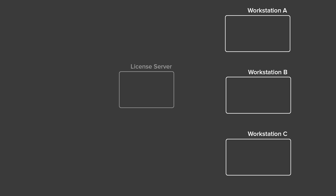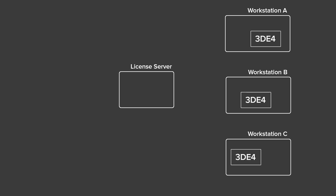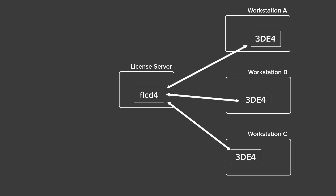Imagine you have three workstations — A, B, and C — and a dedicated license server machine. The goal is to run a separate instance of 3DE4 on each workstation, with a single instance of FLCD4 running on the license server. Each 3DE instance communicates with FLCD4 to secure its license. This communication happens through port 57423, so make sure your firewall isn't blocking this. FLCD4 needs to sync with our cloud servers, so the license server must be online. Your individual workstations don't need internet access in this scenario.